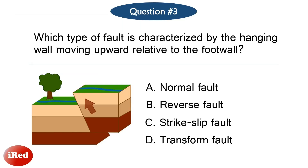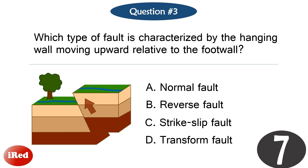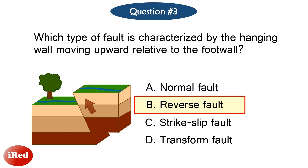Question number three. Which type of fault is characterized by the hanging wall moving upward relative to the footwall? The correct answer is letter B: reverse fault.